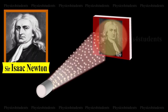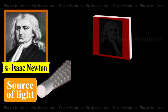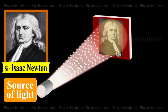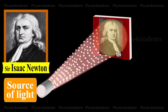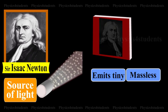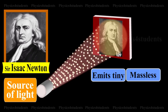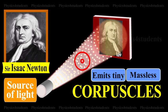Corpuscular Theory. According to Newton, a source of light or a luminous body continuously emits tiny, massless and perfectly elastic particles called corpuscles.